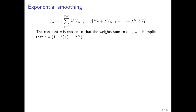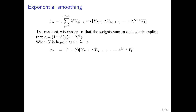What is left is this constant c, which should be chosen such that the weights sum to one, which implies that c equals one minus lambda, or one minus lambda to the n power. When n becomes large and lambda is not too close to one, c is approximately equal to one minus lambda, and if we insert that we get this expression.